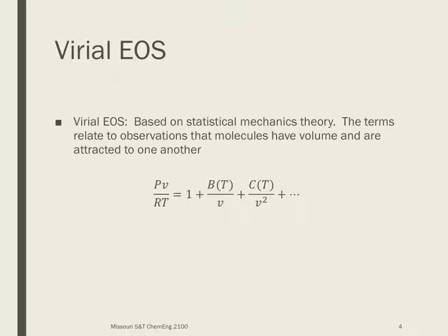The virial equation of state is the one based on statistical mechanics theory. The terms are based on observations of how molecules truly behave because of their size, their shape, and their attraction to one another. The base form of the virial equation of state is a series of terms that take the form of a constant — but that constant varies with temperature — over V to the nth power, for n going from zero to infinity. The reality is the theory hasn't gone out that far to infinity, but the first few terms are fairly well known and characterized for a few substances.